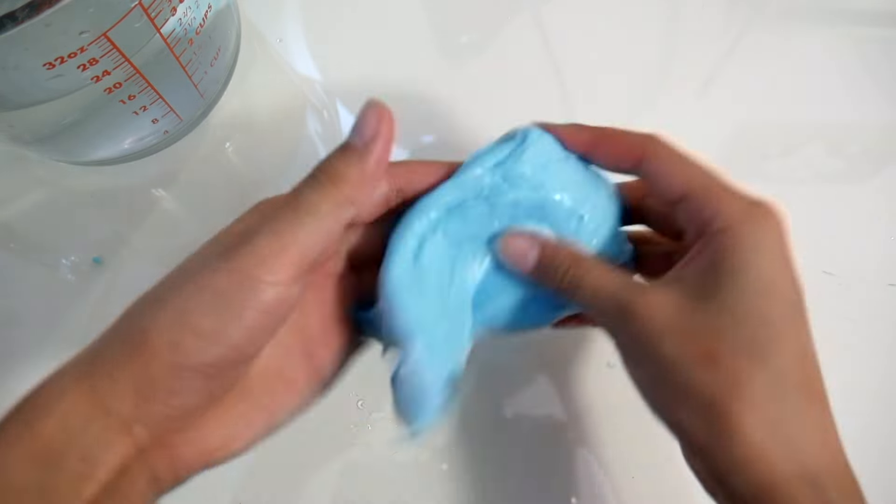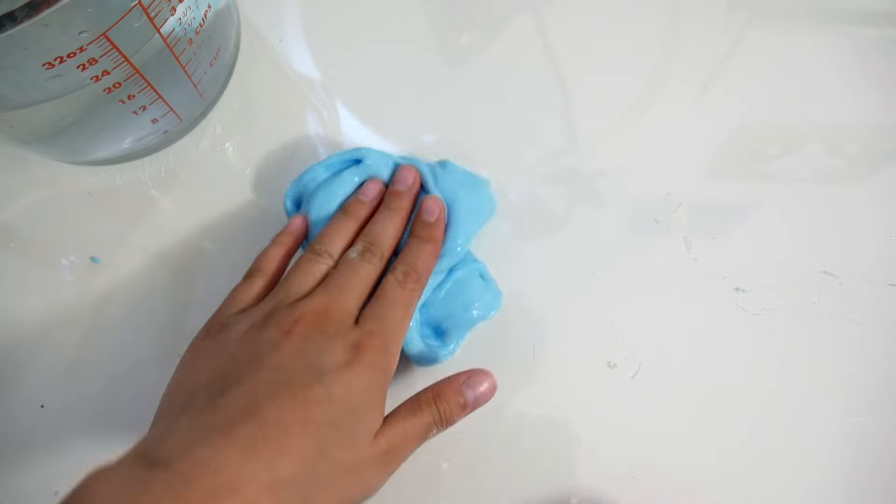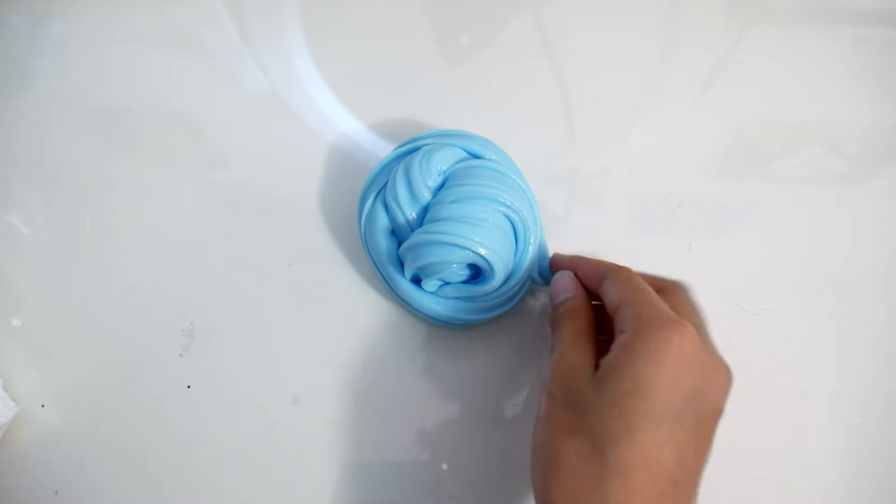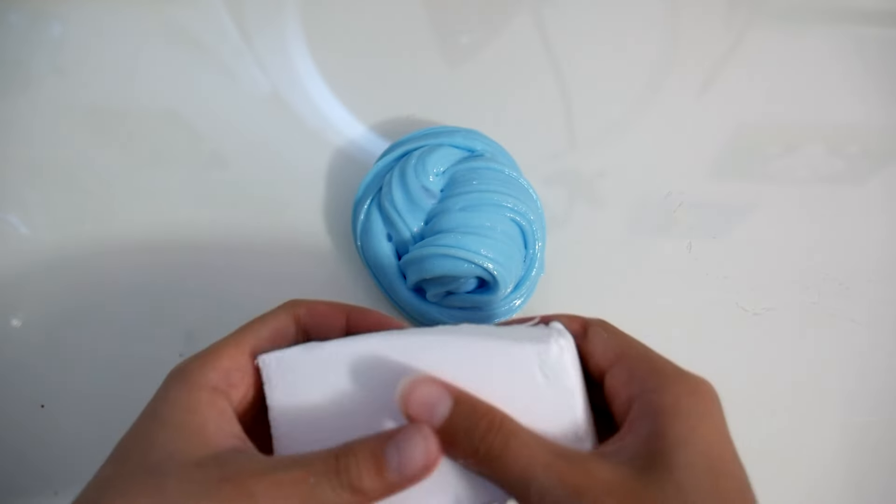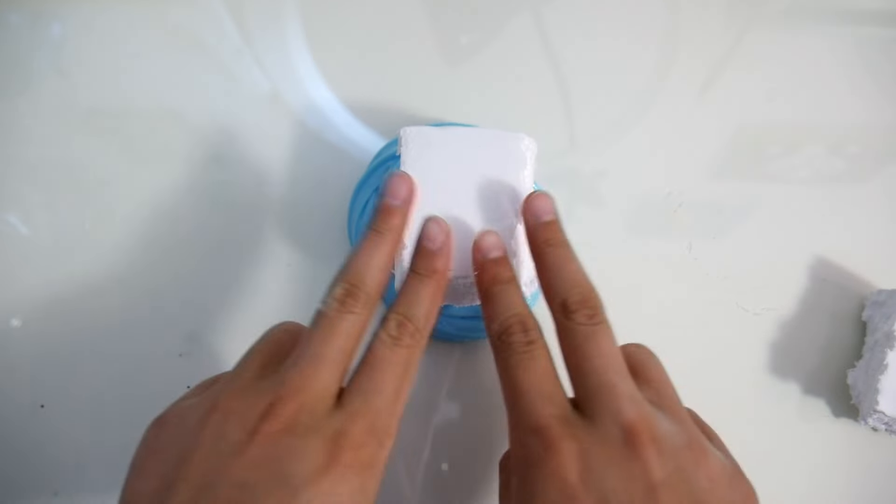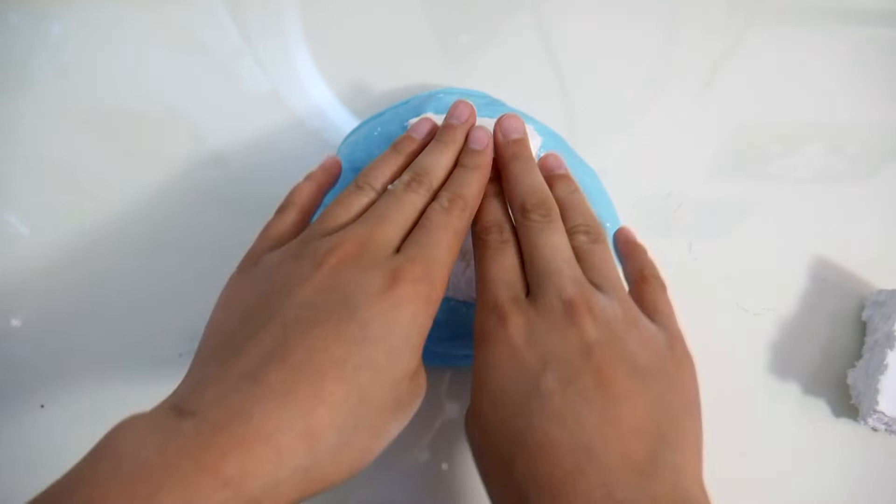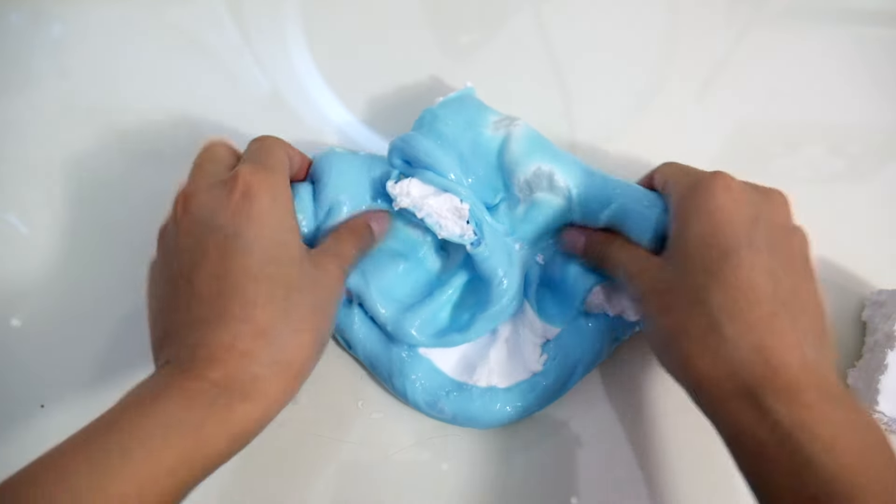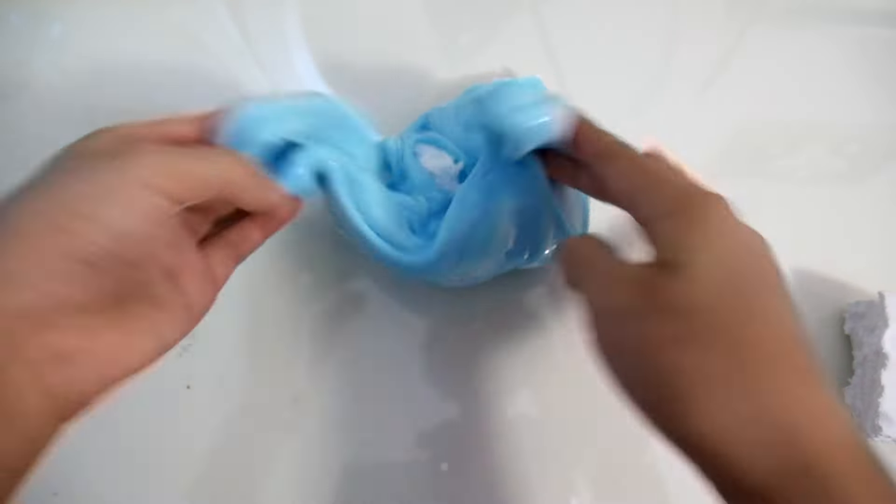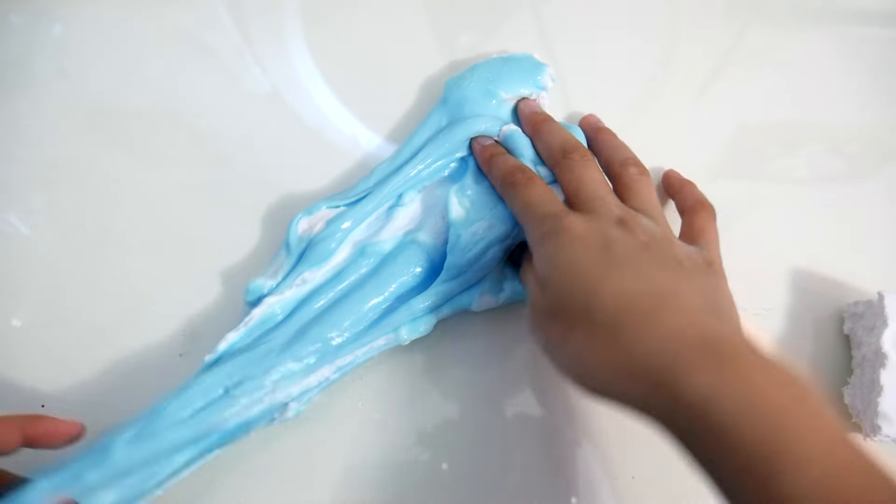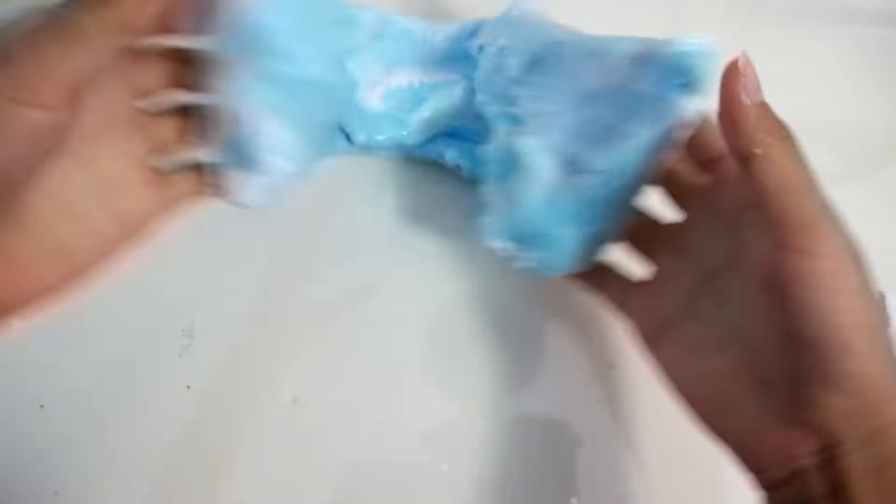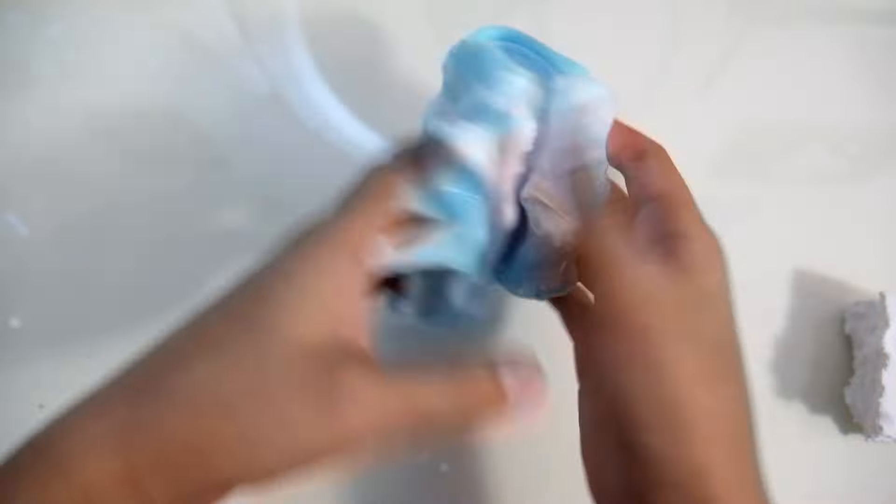All right, so the slime is nice and smooth and even and beautiful. So now it is time for our clay. This is probably about four ounces now. Now you're just gonna mix in the clay with the slime very well. Basically gonna mix it in until you see no more clay and just some butter slime.